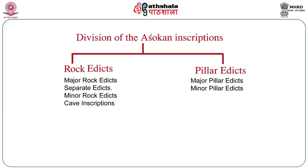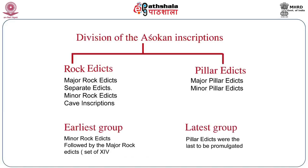Among the rock edicts, you have the major rock edicts, separate edicts, minor rock edicts, and cave inscriptions. The pillar edicts can be divided into only two categories: the major pillar edicts and the minor pillar edicts. The earliest group among them are the minor rock edicts, which were engraved first, and then follow the major rock edicts.